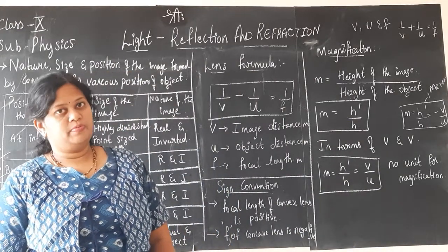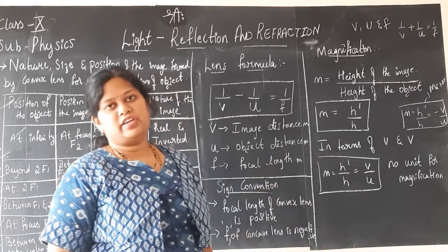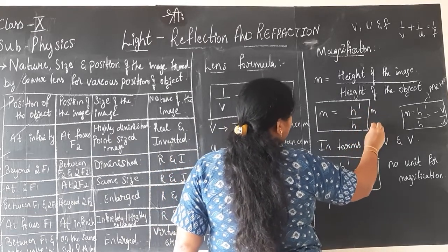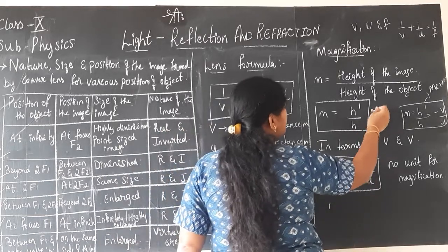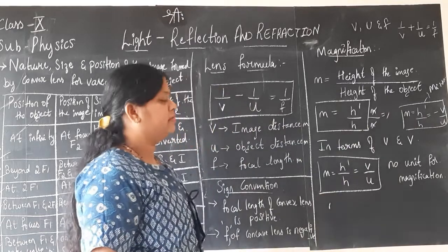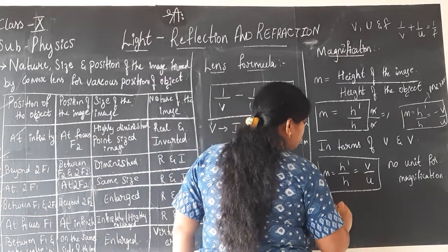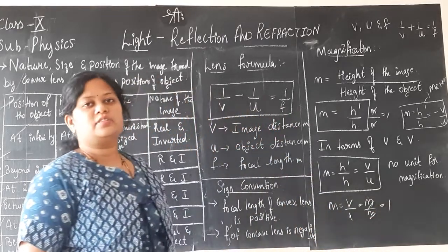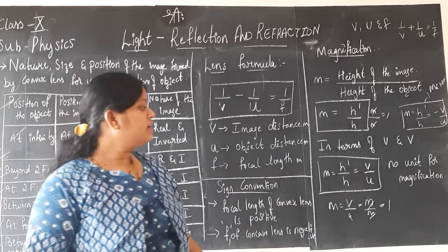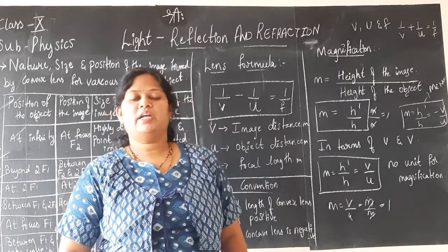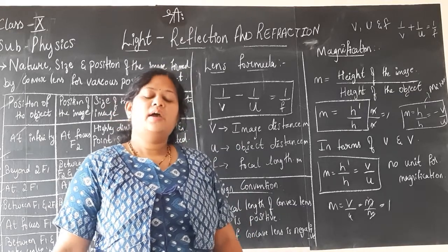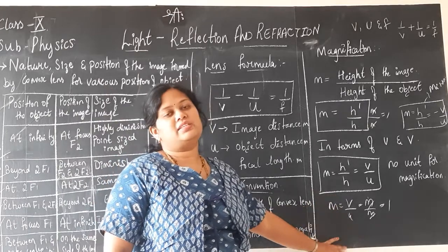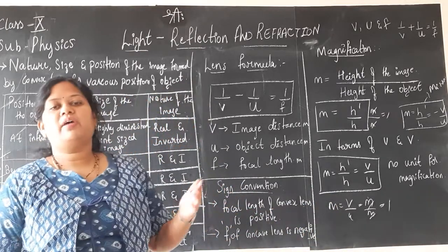There is no unit for magnification. Since m = h-dash/h, the heights are both measured in meters — meter divided by meter cancels, giving a dimensionless quantity. Similarly, if you express it as v/u, both are distances in meters, so they cancel. That is why magnification has no unit — you need not write a unit when solving magnification problems.